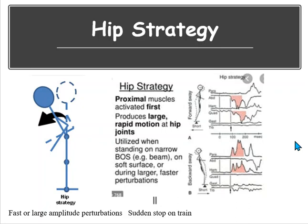Likewise, if you're going into backward sway, you would get your hamstrings into hip extension and your erector spinae muscles. You're kind of jerking back, almost pushing your hip region forward to maintain your body over that base of support. Again, these are for large, abrupt perturbations.